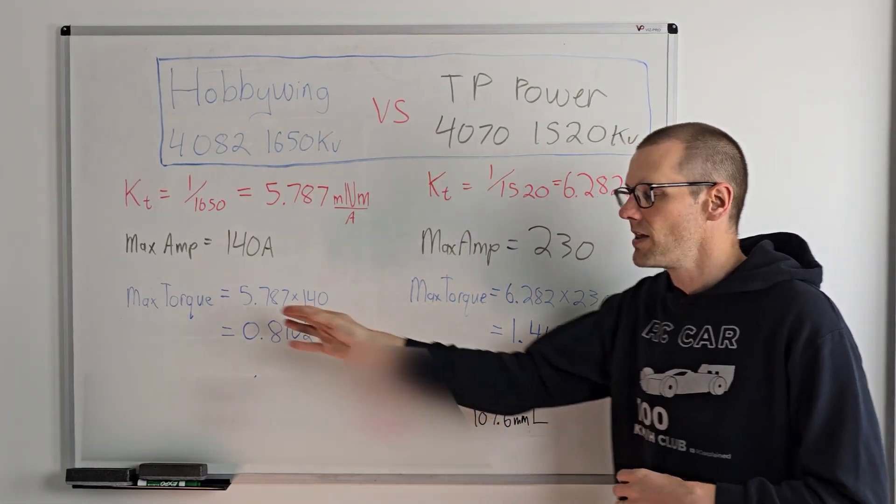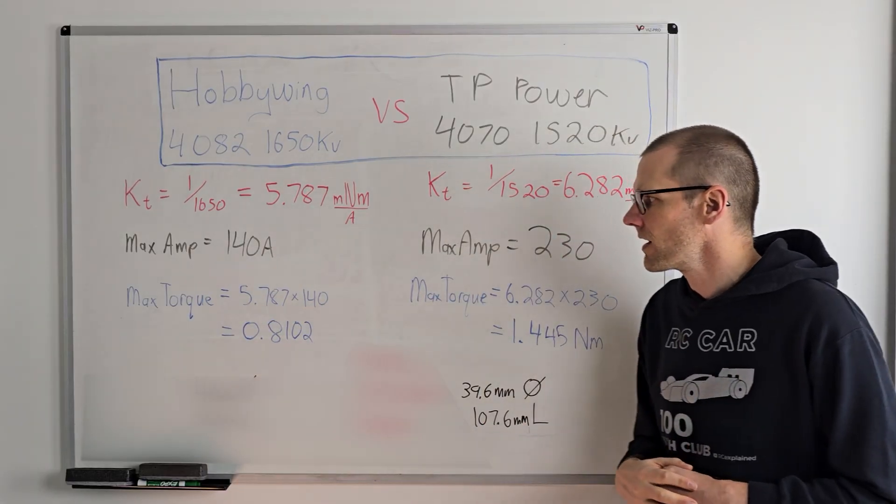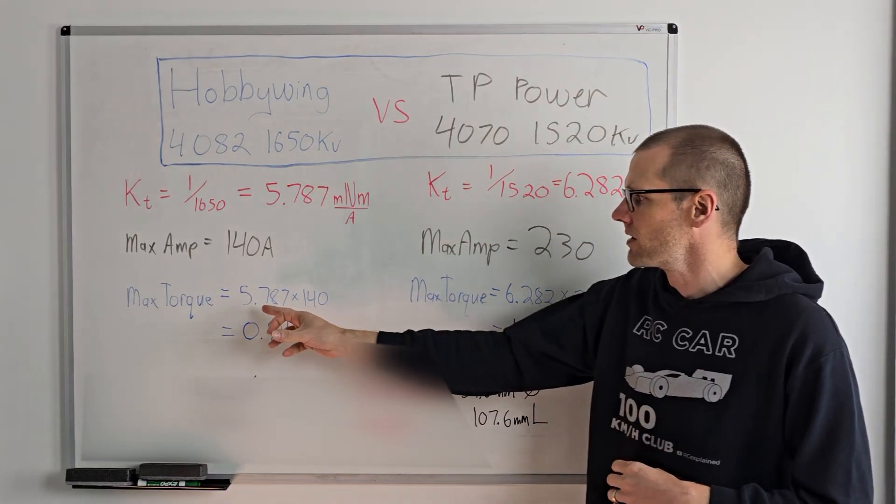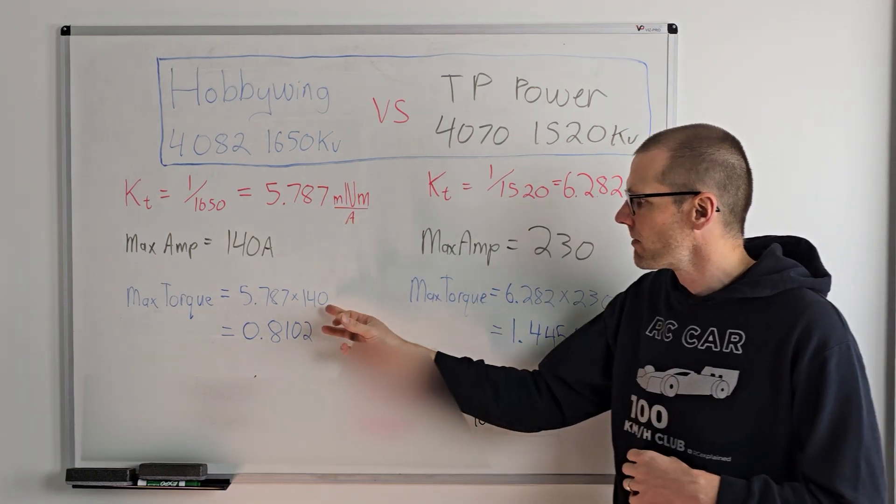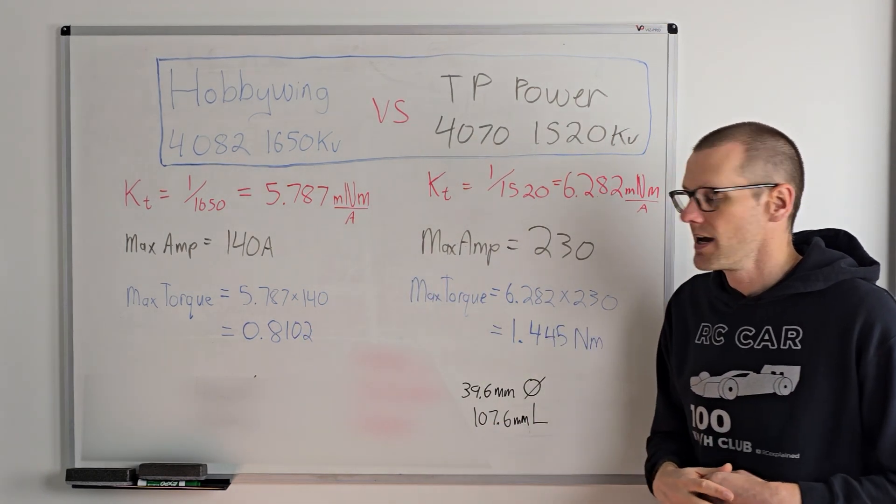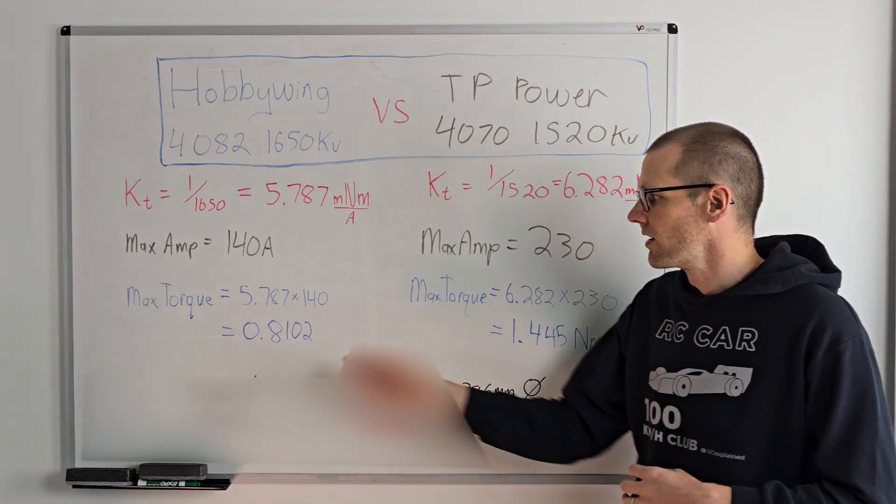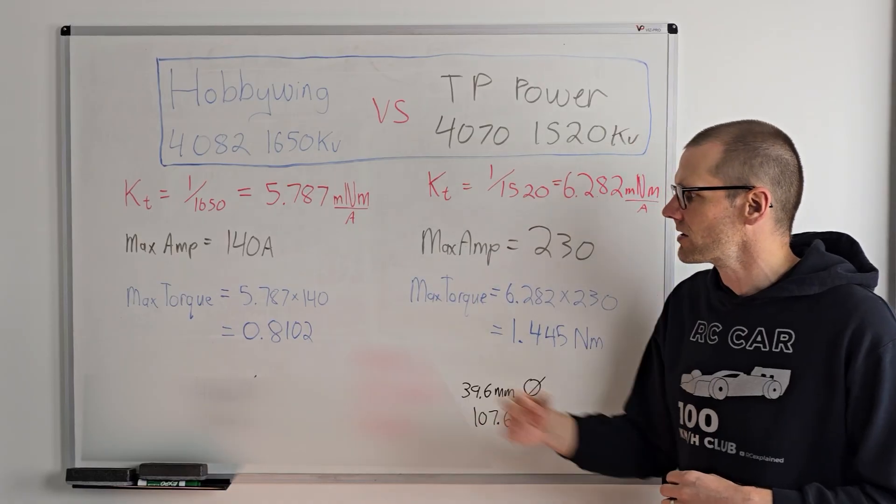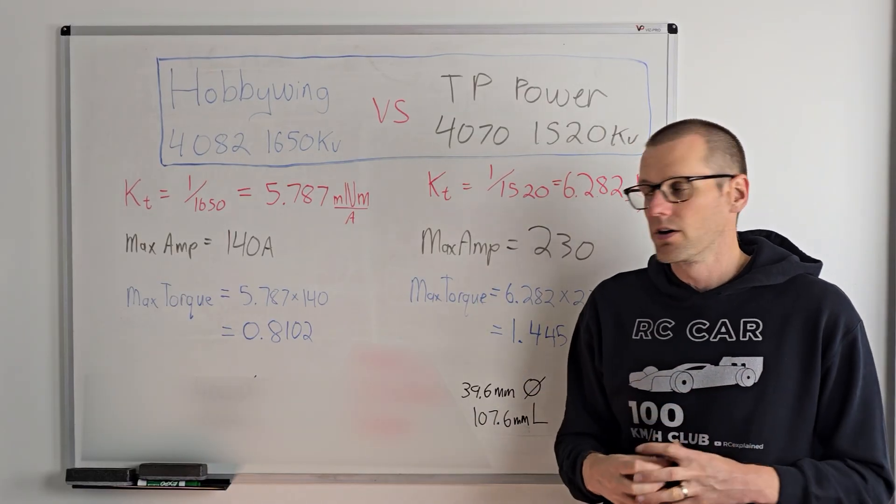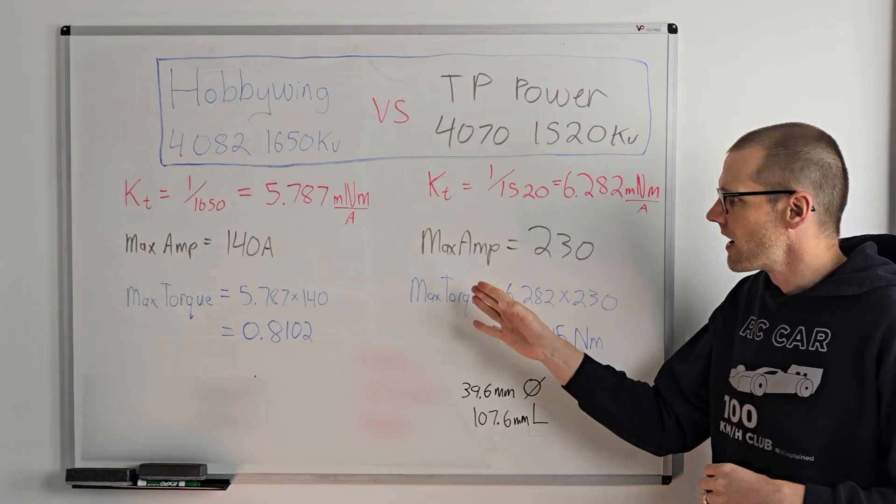Now we break it into that maximum torque value and the maximum torque that we get out of the one brushless motor is going to be 5.787 millinewton meters per amp multiplied by amps. And we get a total amount of torque here as 0.8102. And the unit of measure here is newton meters. And then we go and take a look at our other motor here.